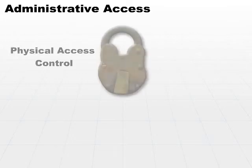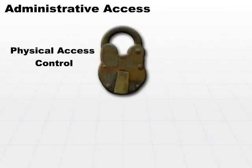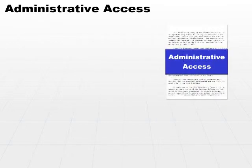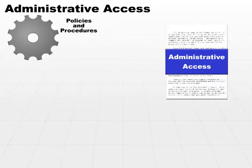The next type of access control is administrative access control. Where physical access control physically stopped a subject from touching some hardware, administrative access control is basically a set of rules, a set of strategies determined to stop subjects from accessing objects they shouldn't be accessing, but also some of these may be after the fact to detect that someone has accessed an object they're not supposed to.